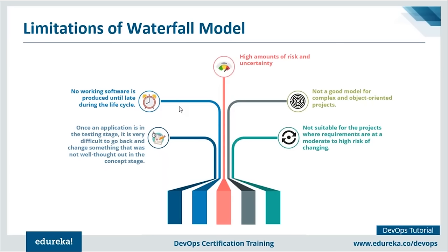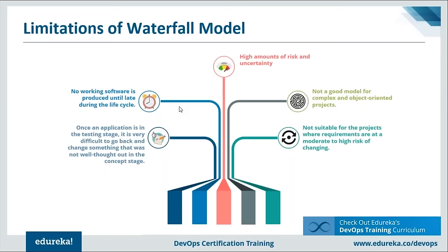Jessica asks whether all iterations in the waterfall model go through all the stages. There are no iterations as such in waterfall - it's not agile or DevOps. Once a stage is complete, it moves to the next stage. If the application is live and there's a bug - for example due to a flawed software stack version in production - you need to roll back to the previous stable version, which used to take a lot of time.